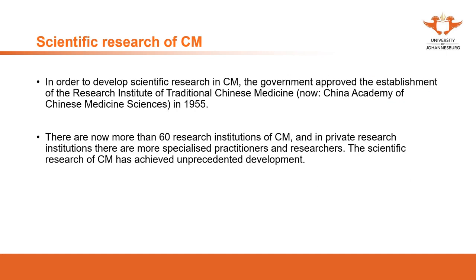For scientific research, research is carried out in universities and research institutes. The first research institute — the China Academy of Chinese Medicine Sciences — was established in 1955. Now there are more than 60 research institutions, and all these institutions carry out the responsibility of scientific research in Chinese medicine.